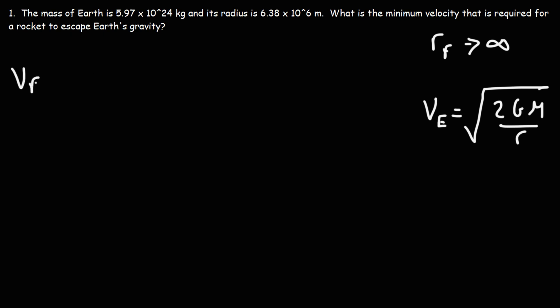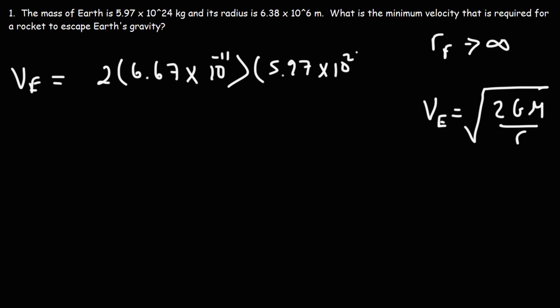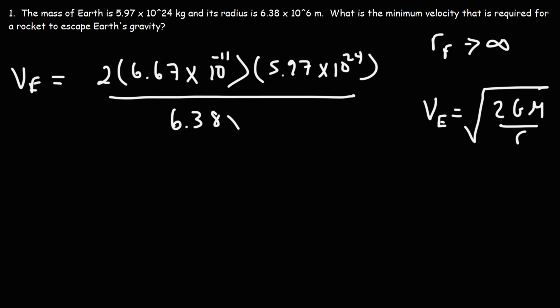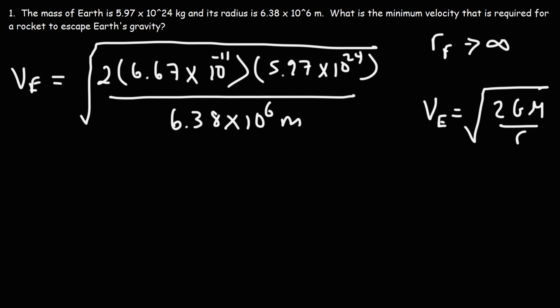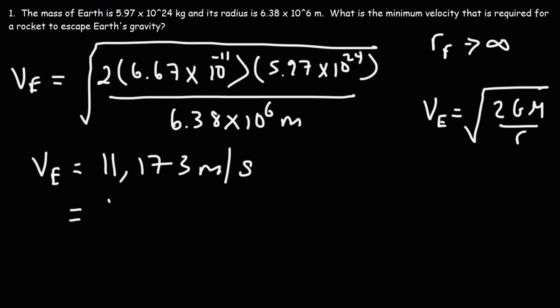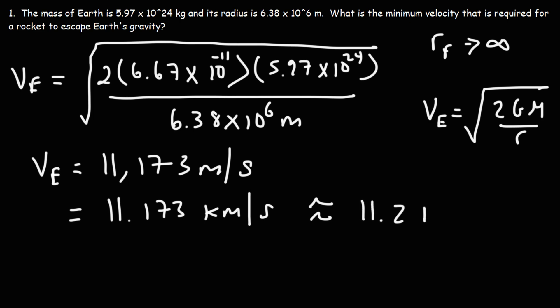Now let's go ahead and calculate it. The universal gravitation constant is 6.67 × 10⁻¹¹. The mass of the Earth is 5.97 × 10²⁴ kilograms. The radius of the Earth — which is the distance between the center of the Earth and a rocket when it blasts off from ground level — is 6.38 × 10⁶ meters. Plugging those values in, the escape velocity comes out to 11,173 meters per second, which is 11.173 kilometers per second, or approximately 11.2 kilometers per second.